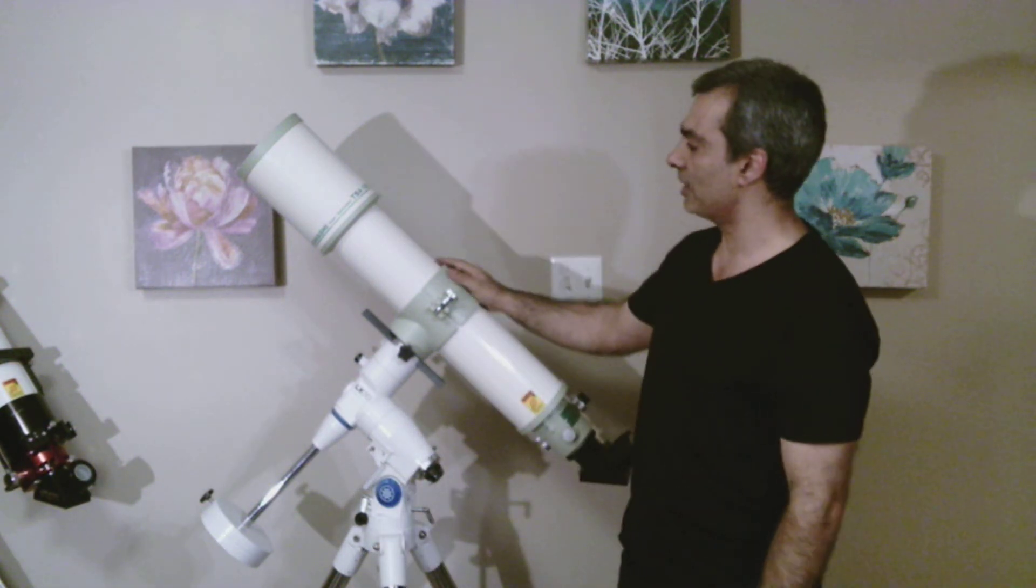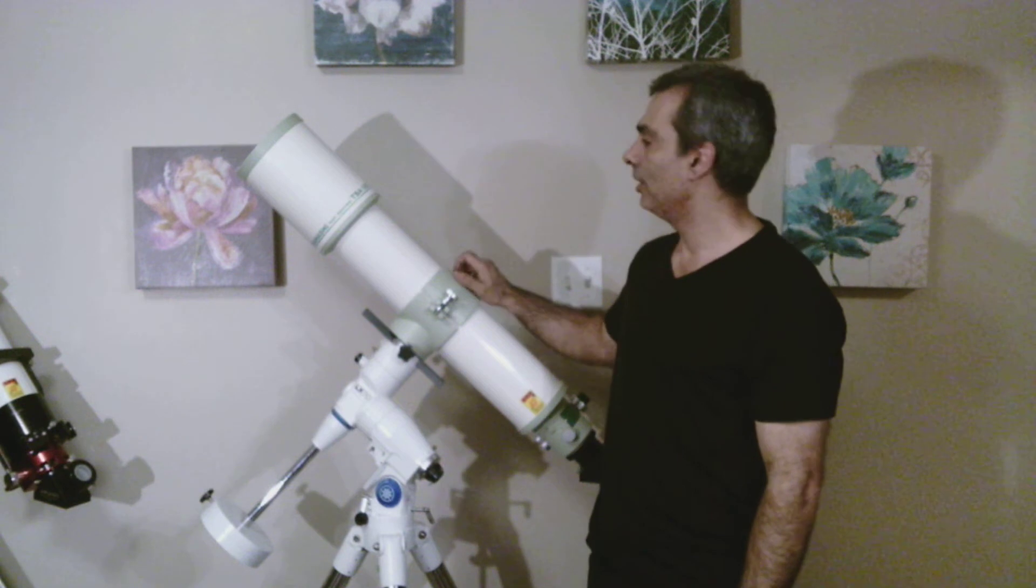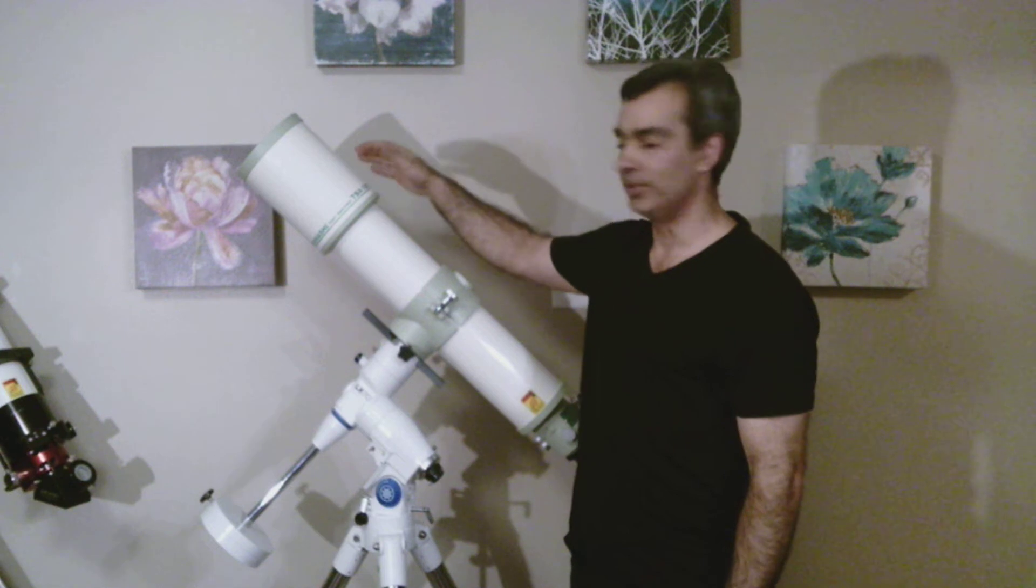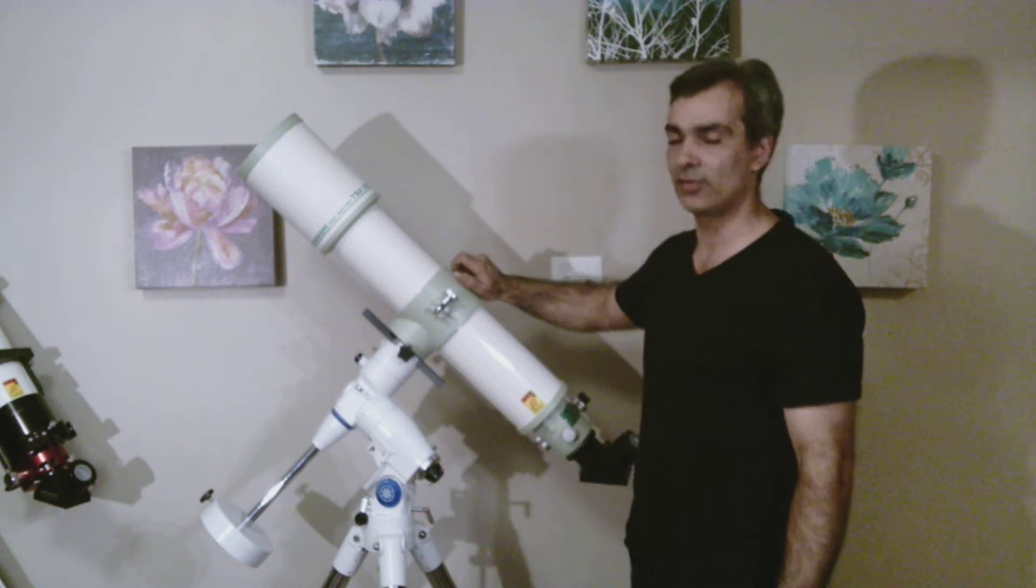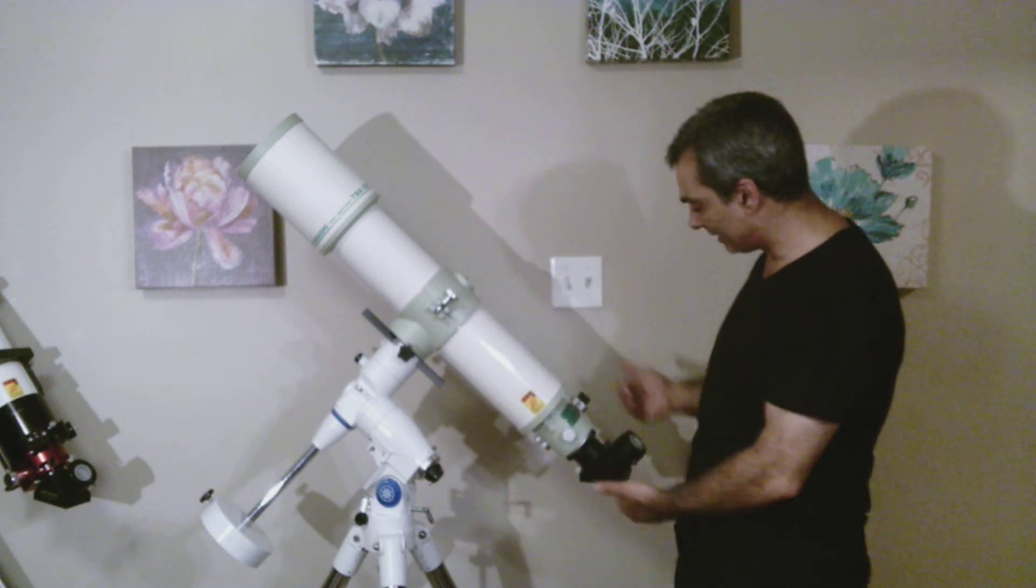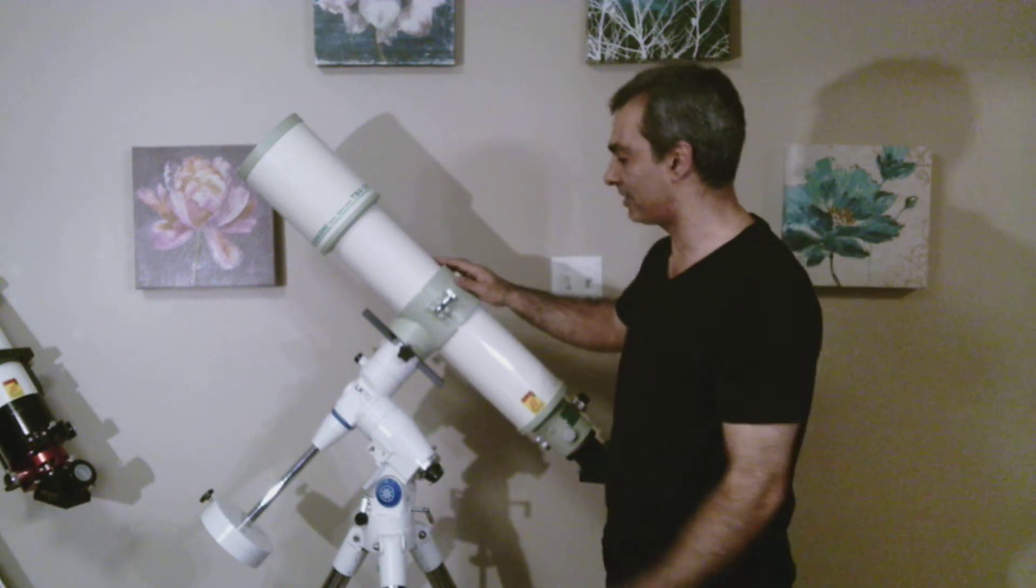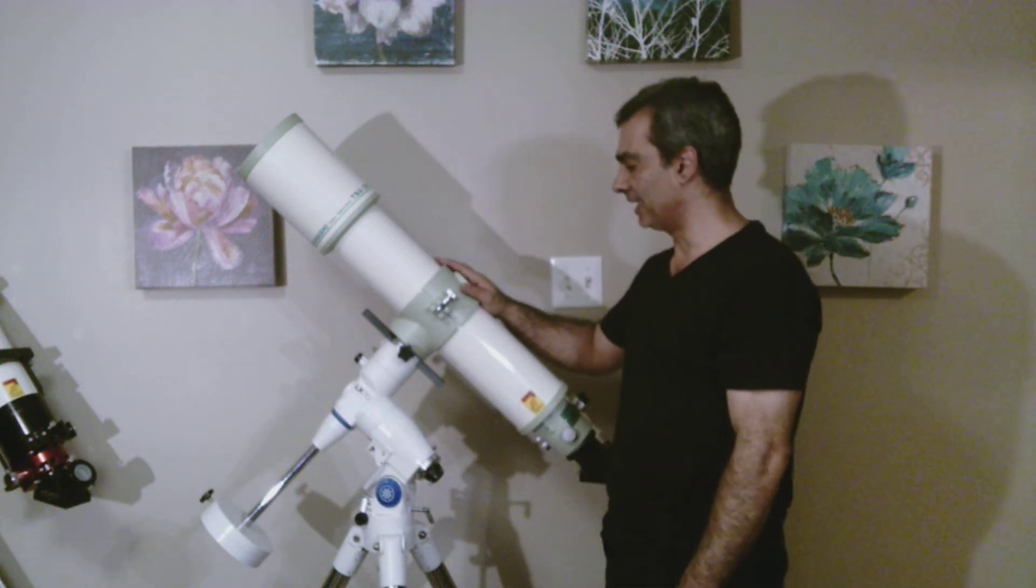It's a Takahashi. It's called the TSA, which is a triplet super apochromatic, 120. So it's 4.7 inch, and it's an F8. So it is a triplet, 53 glass, pretty much the best you're going to get.